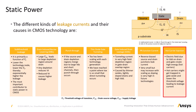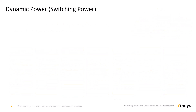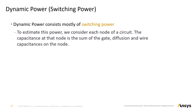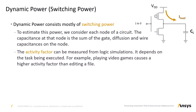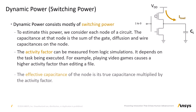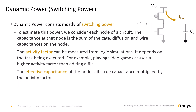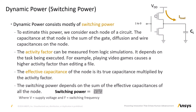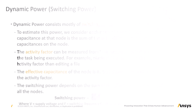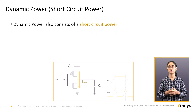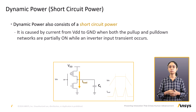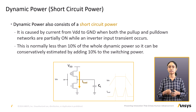Dynamic power switching power: dynamic power consists mostly of switching power. To estimate this power, we consider each node of a circuit. The capacitance at that node is the sum of the gate, diffusion, and wire capacitances on the node. The activity factor can be measured from logic simulations; it depends on the task being executed — for example, playing video games causes a higher activity factor than editing a file. The effective capacitance of the node is its true capacitance multiplied by the activity factor. The switching power depends on the sum of the effective capacitances of all the nodes: switching power = C·V²·f, where V equals the supply voltage and f equals the switching frequency. Dynamic power also consists of short-circuit power, caused by current from Vdd to ground when both the pull-up and pull-down networks are partially on during an inverter input transient. This is usually less than 10% of the total dynamic power, so it can be conservatively estimated by adding 10% to the switching power.